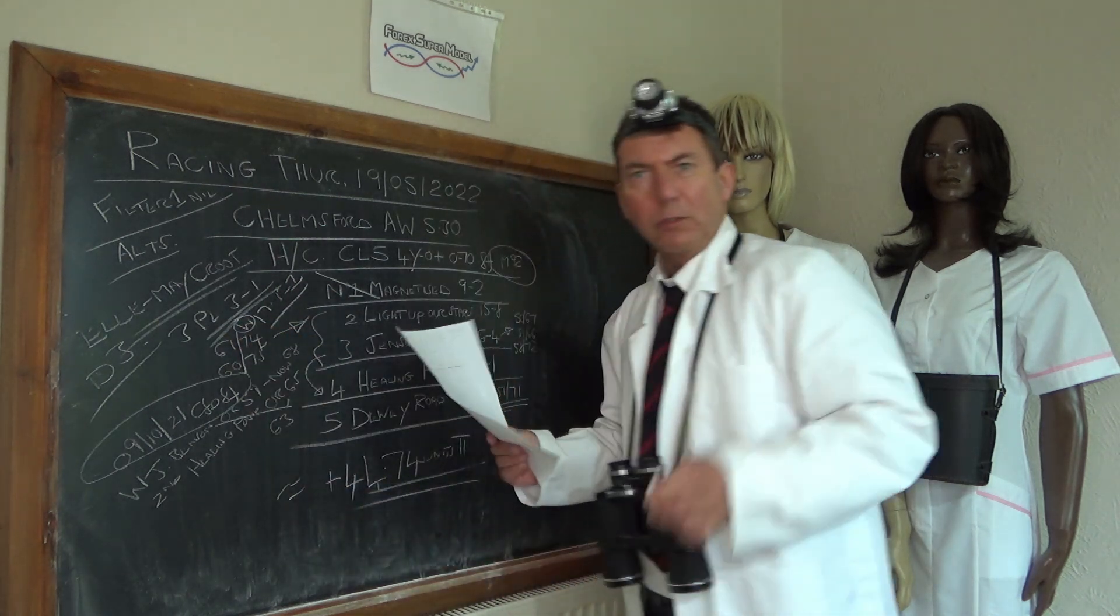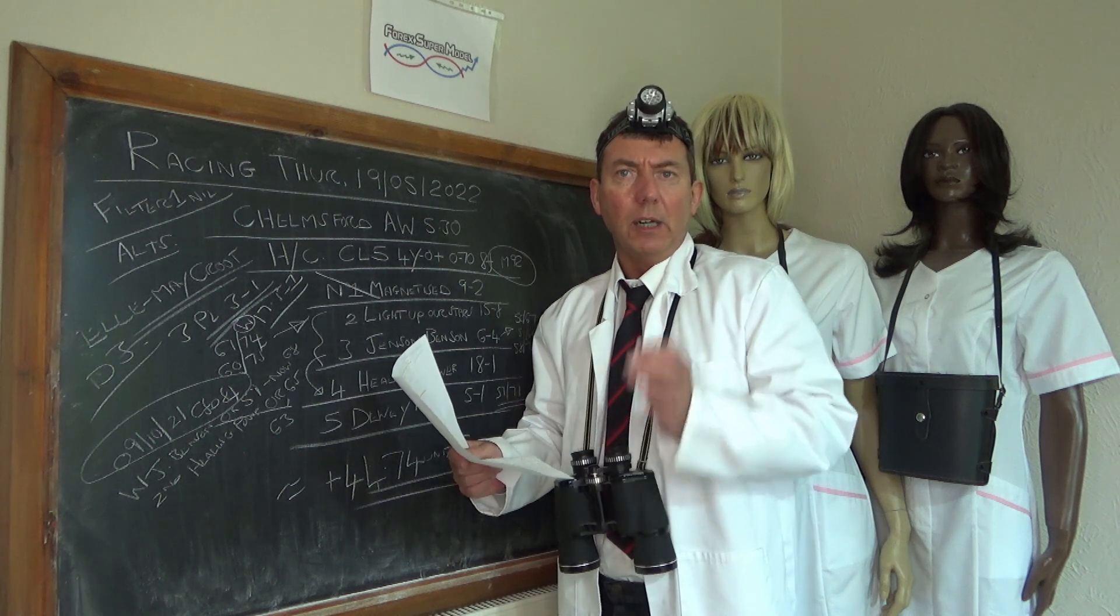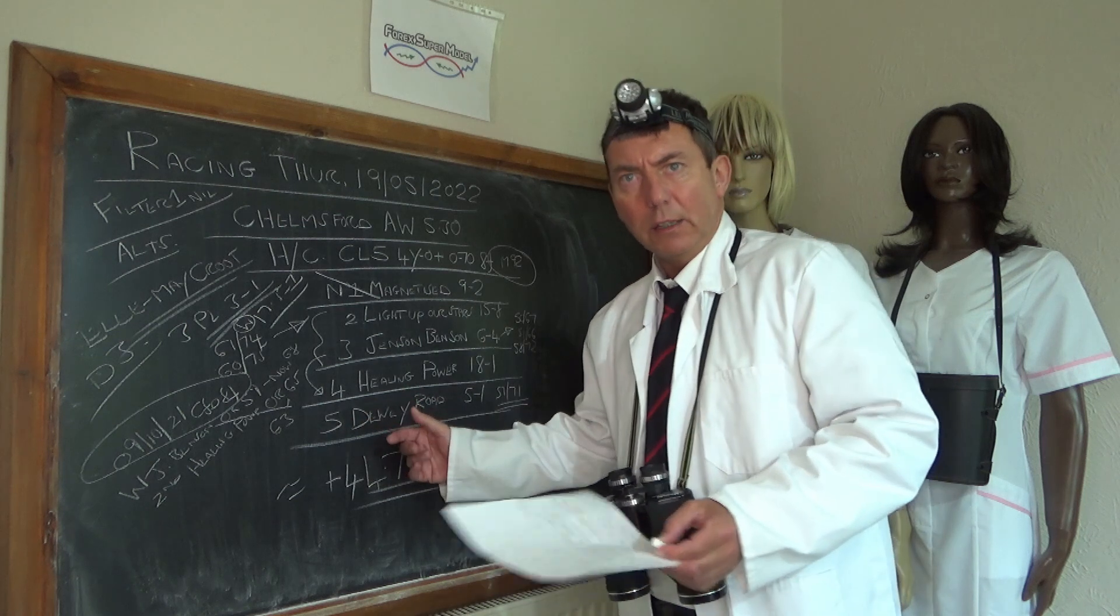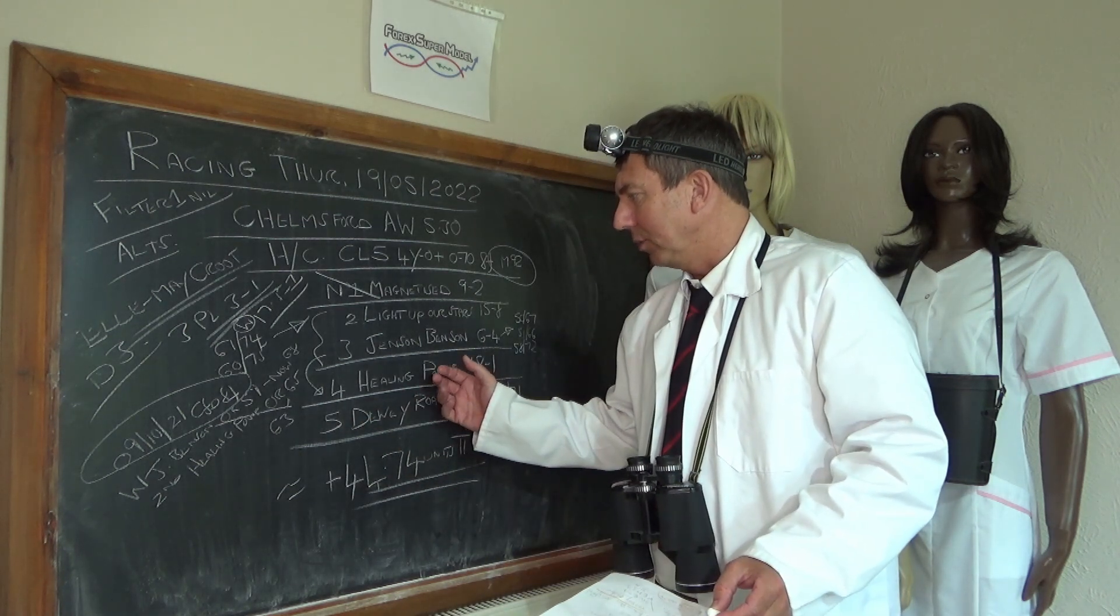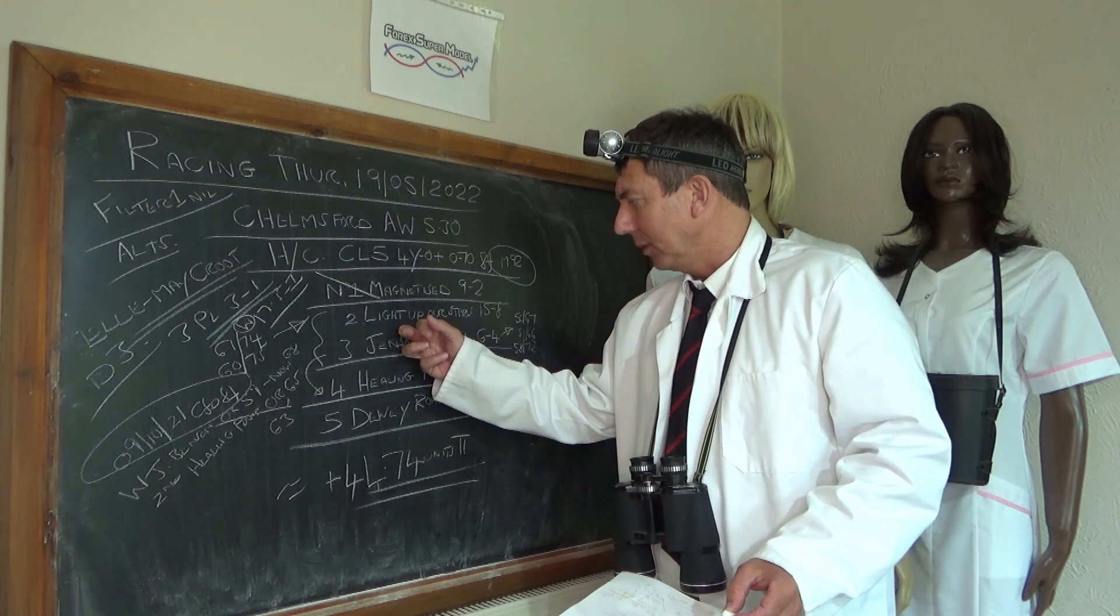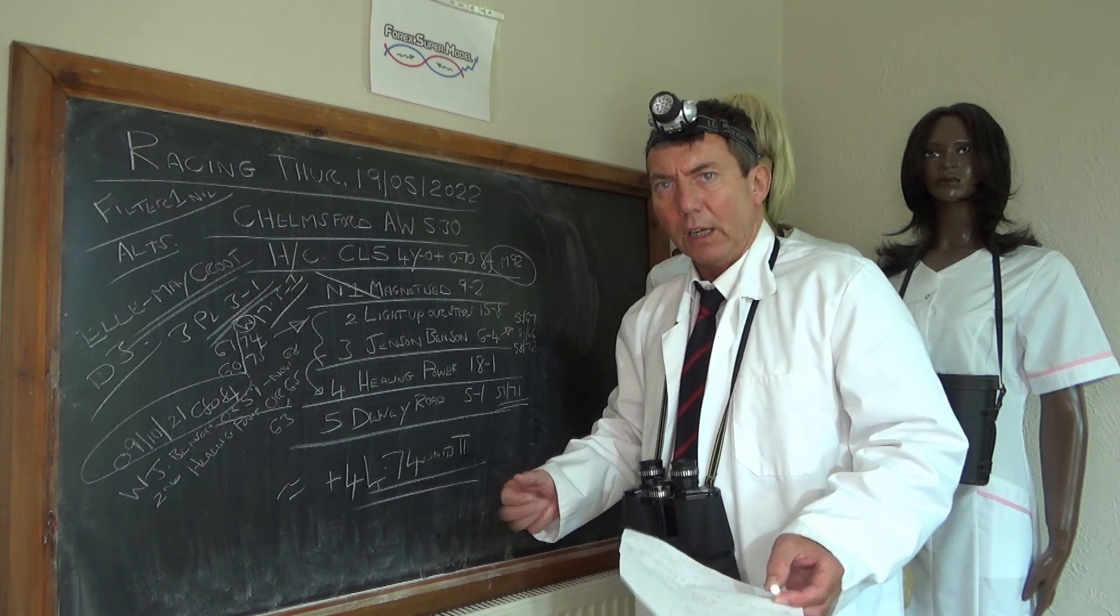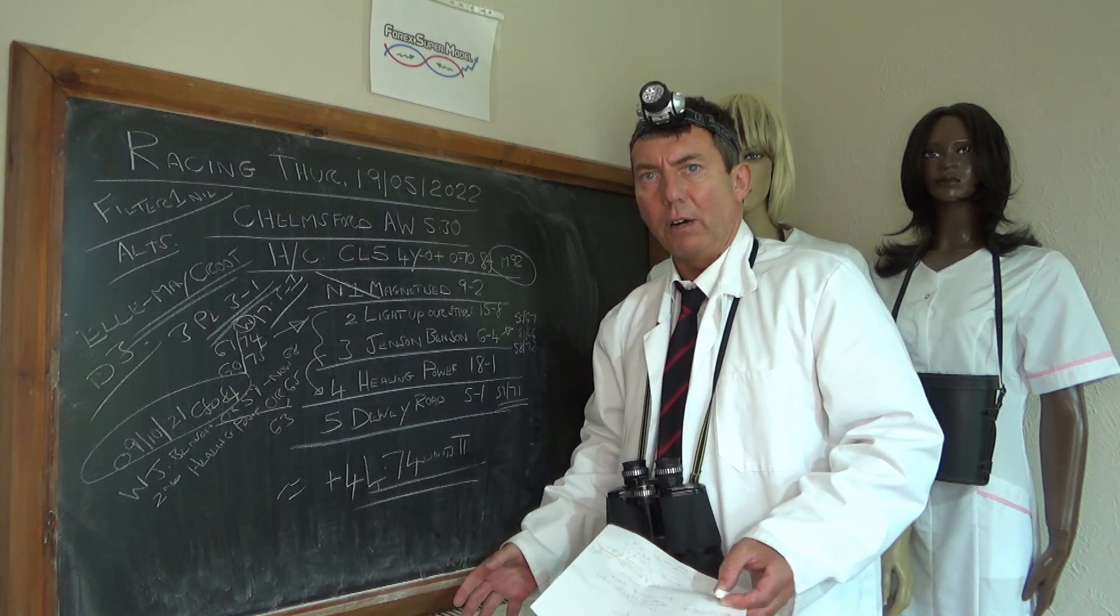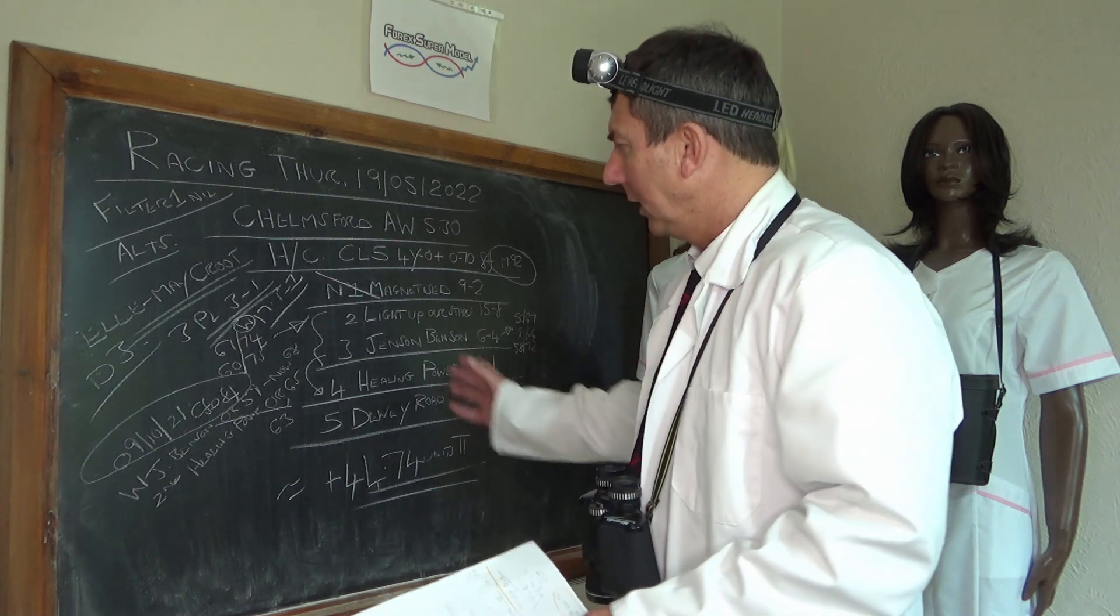At 0.25 of the unit, we're going to probably top that up. The over round's about 102% at the moment, so it's likely, and nobody likes Healing Power, well apart from us, because it's really chalked down basically. And they're all over these front two. So it's likely to drift. If we can get sort of 20s and 22 to one on exchanges, we'll have another go, up to about half a unit, so we'll have a 0.75 unit on in total on Healing Power.